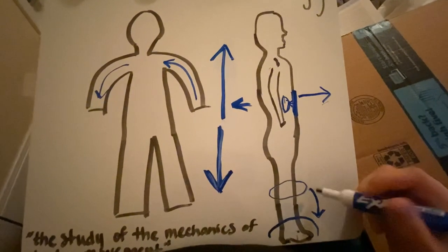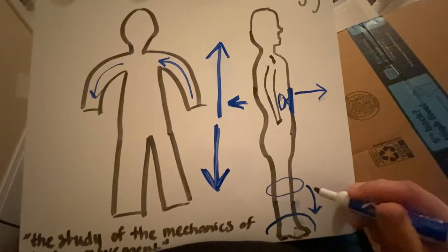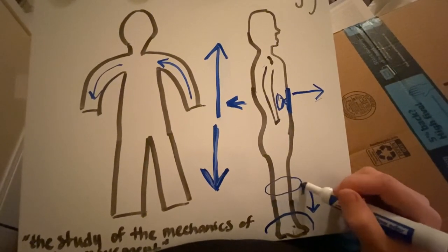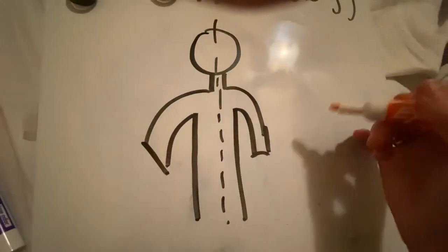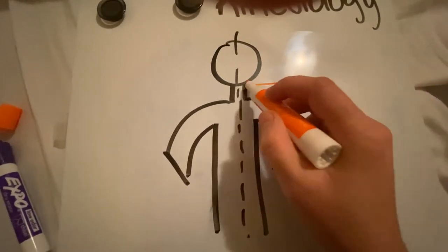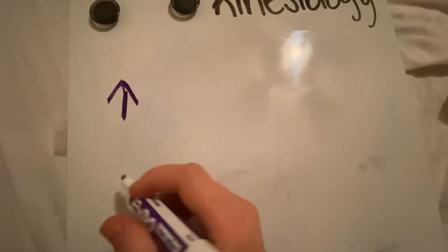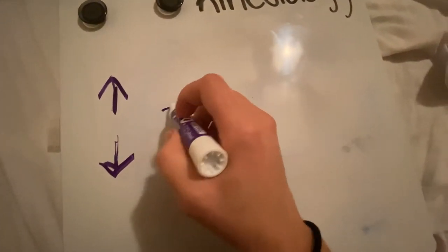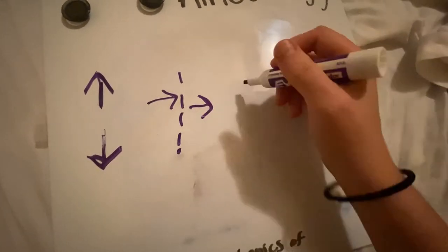Back to the knee — you can say that the foot is distal to the knee, or you can say that the knee is proximal to the foot. Another one of these sets is medial, which means towards the midline, and lateral, which means away from the midline. So we have superior, which means above, and inferior, which means below.